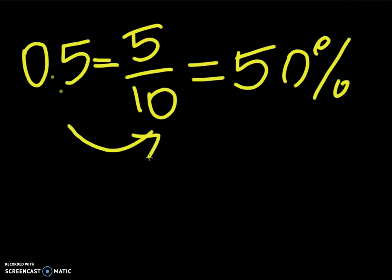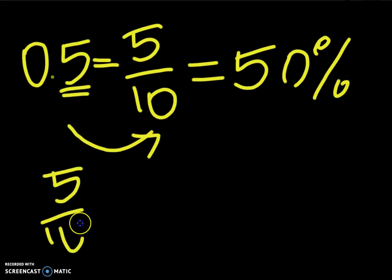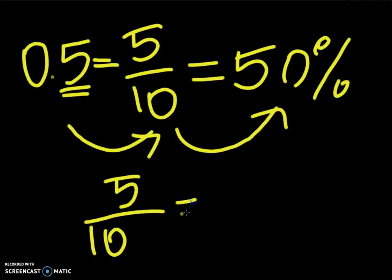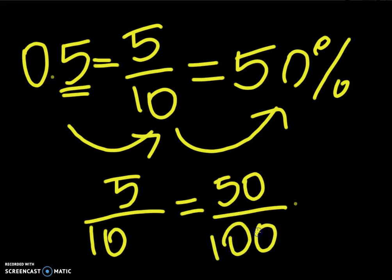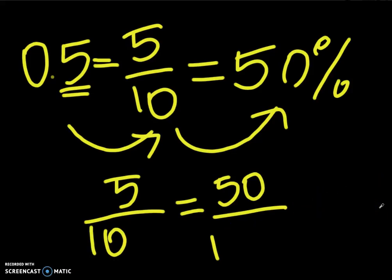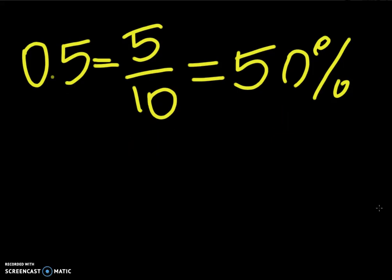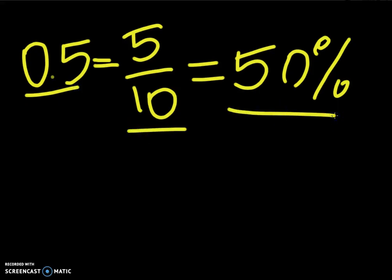And from the fraction to a percentage: 5 over 10 — since a percentage has to be out of 100 — we multiply top and bottom by 10 to make it 50 over 100, which equals 50%. So 0.5 is also equal to 5 over 10, which is also equal to 50%. All three pieces of data show the same information but in different forms.